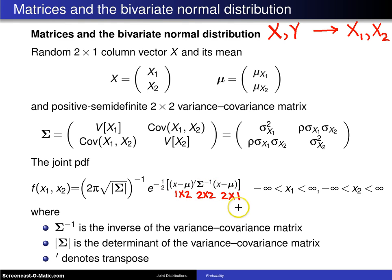And that's exactly what you expect here for the bivariate normal probability density function defined on R2.